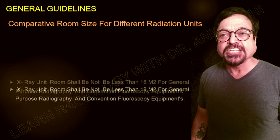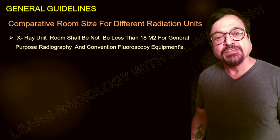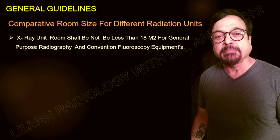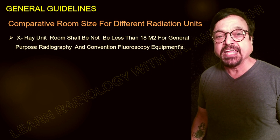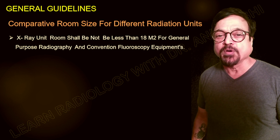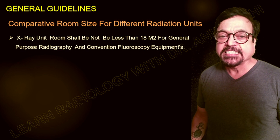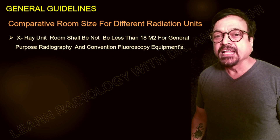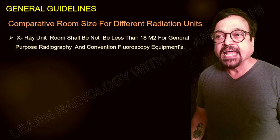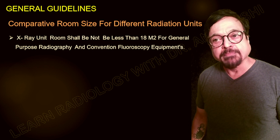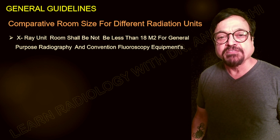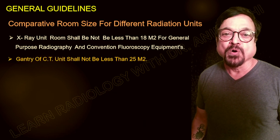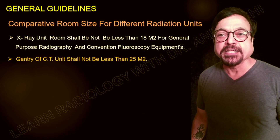What are the general guidelines? The comparative room size for different radiation units is different — it is different for CT, different for x-ray units depending on the kV it generates, and also different for a mammography unit. For x-ray unit room size, it shall be more than 18 square meters for general purpose and conventional radiography, and more than 80 square meters for fluoroscopy equipment.